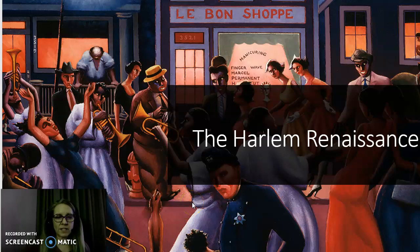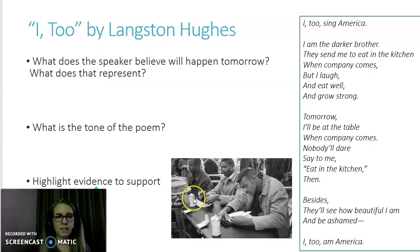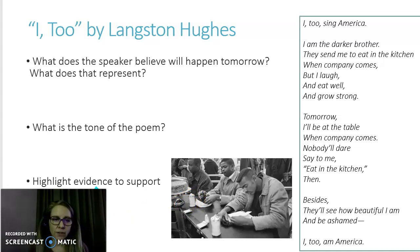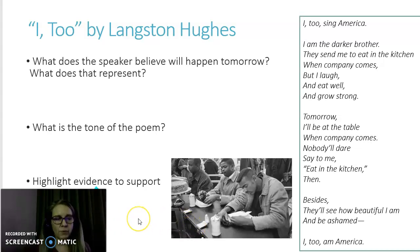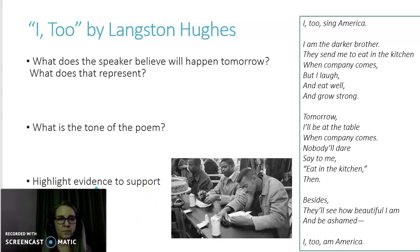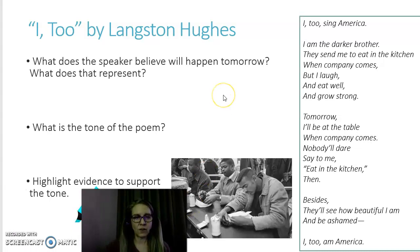Let's look at the Harlem Renaissance next. We'll start with 'I, Too' by Langston Hughes. Take a moment to read this — pause here. Now that you've reviewed it, what does the speaker believe will happen tomorrow, and what does that belief represent? What is the tone of this poem, and what evidence supports that tone?